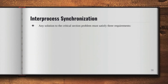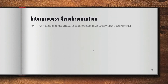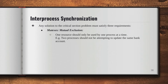To solve the problem — as we discussed, operating systems face difficulty in managing the processes from entering the critical section — it needs to satisfy three different requirements. First is mutex, mutual exclusion. Mutual exclusion means that one resource should only be used by one process at a time. For example, two processes should not be attempting to update the same bank account.